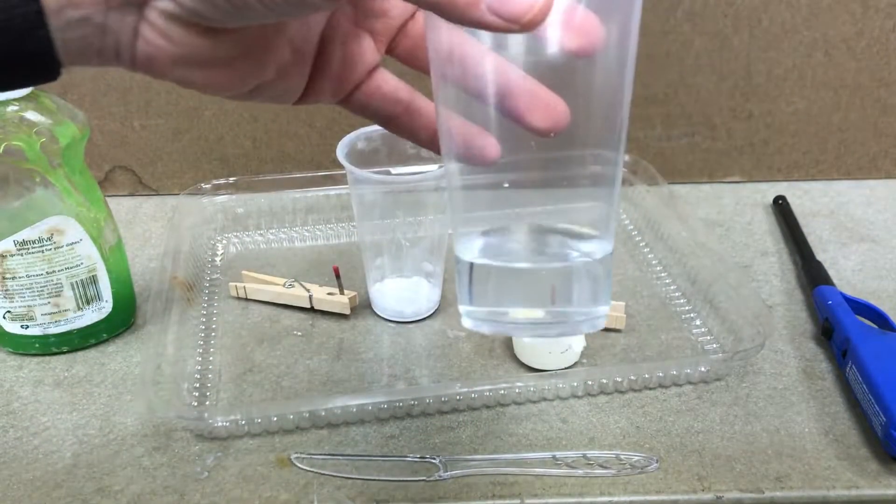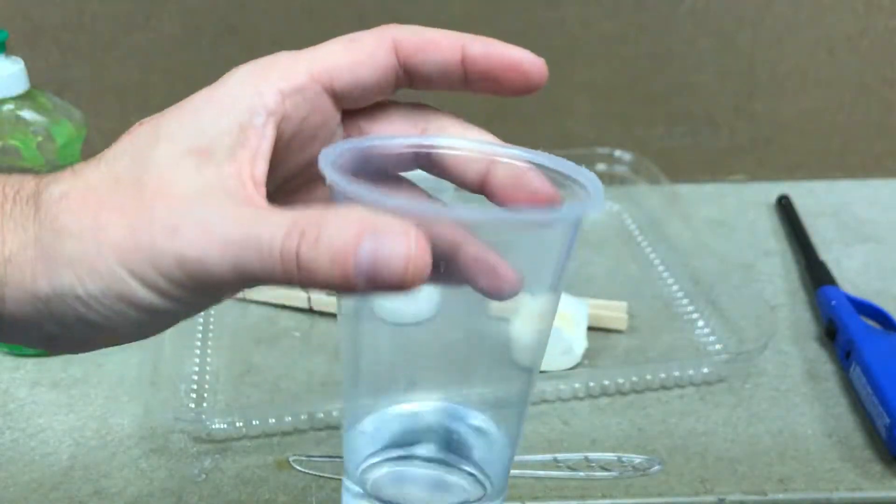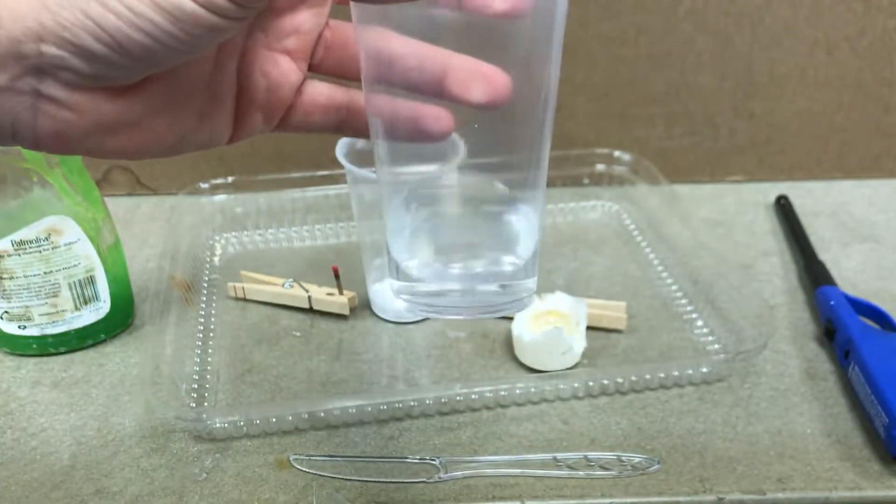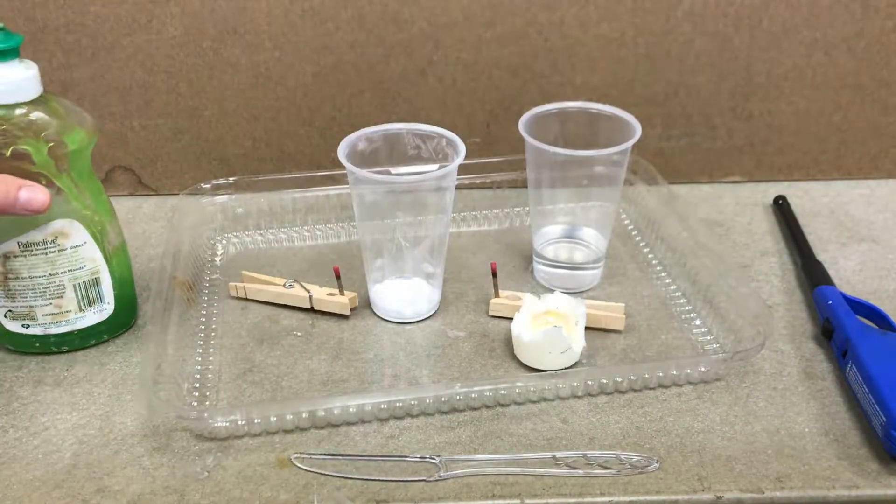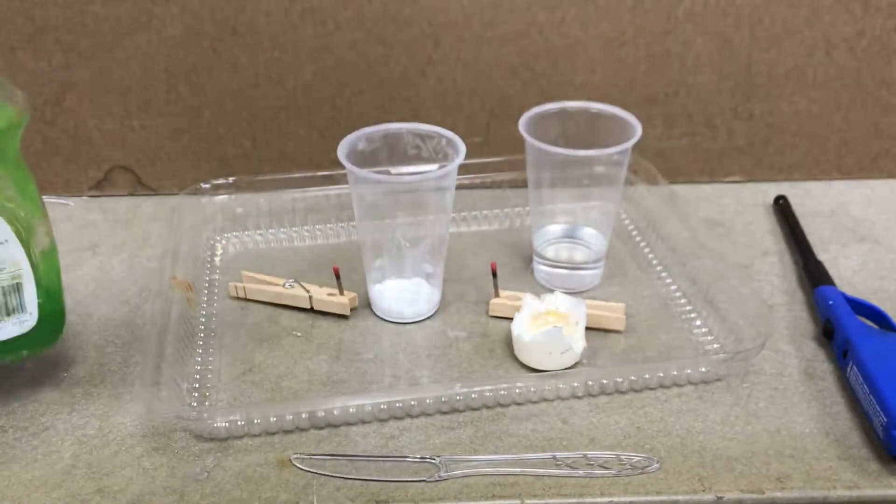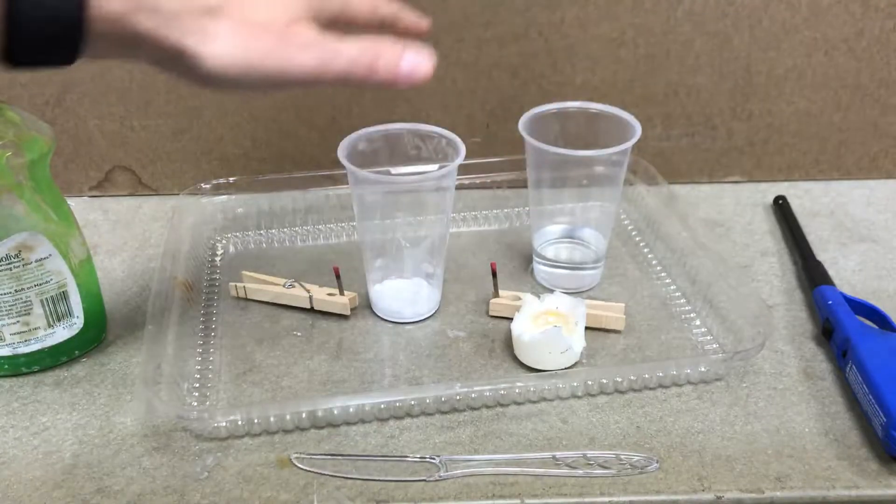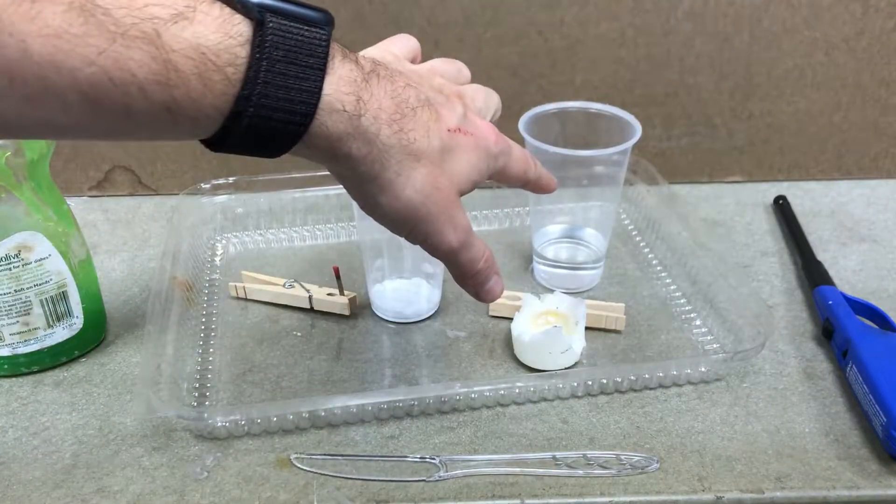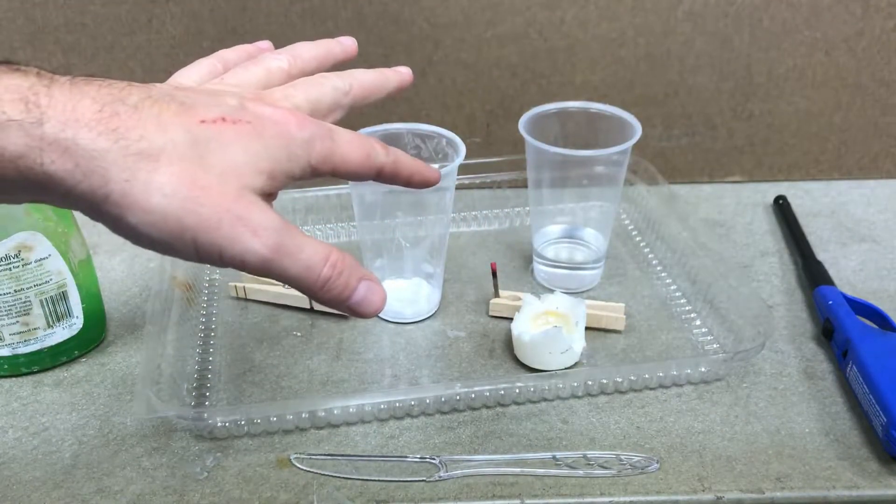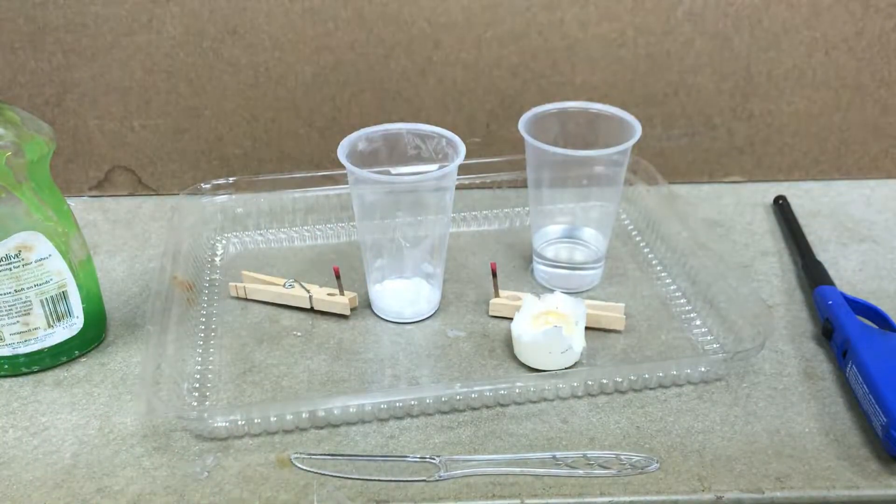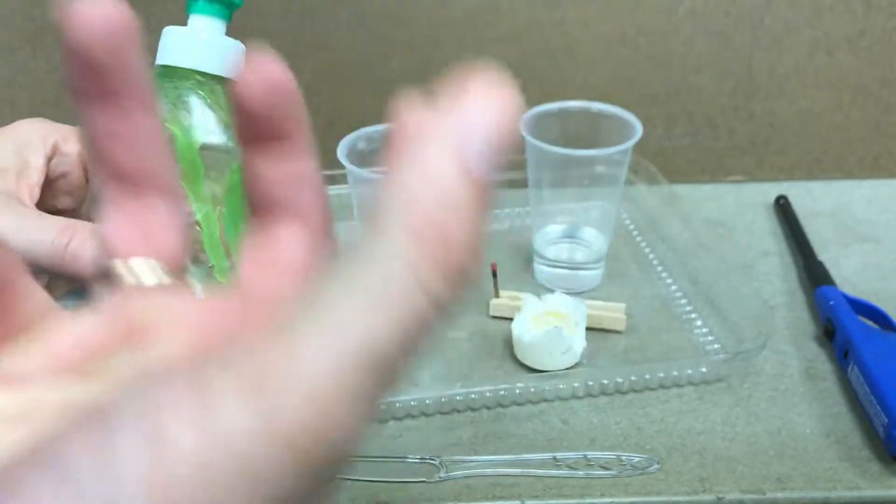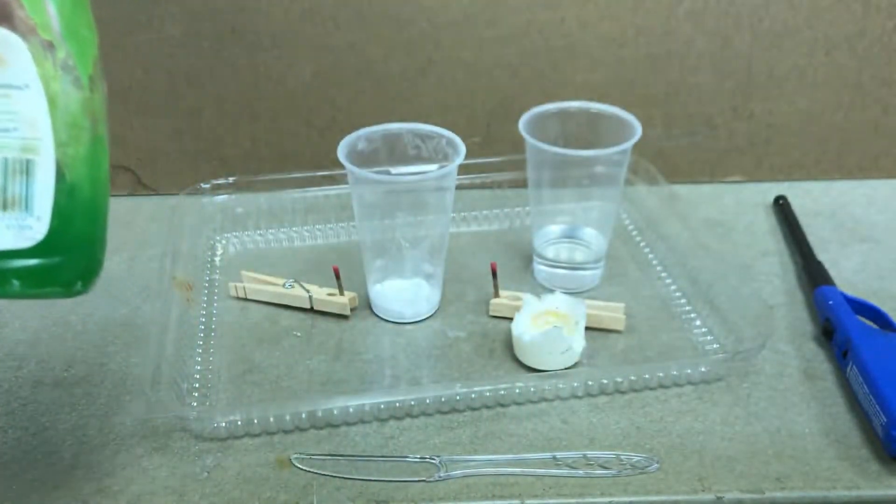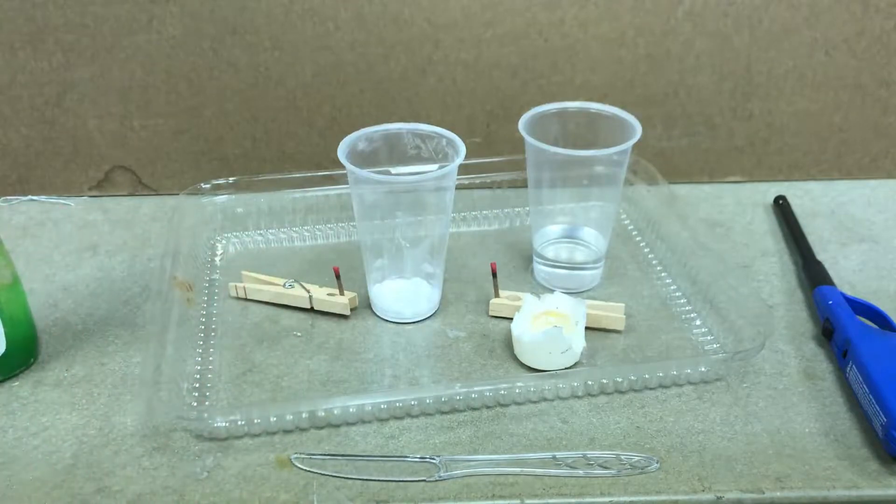This is white vinegar. Really, any vinegar would do, but the white one is a little cleaner. And then I have some soap. When you mix baking soda and vinegar, it produces carbon dioxide, and you could use that to put out a fire. But with the soap, it also makes bubbles, foam bubbles of carbon dioxide. So it's like fire retardant foam, and it looks cool.